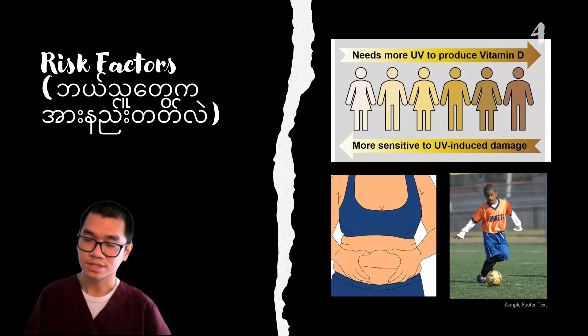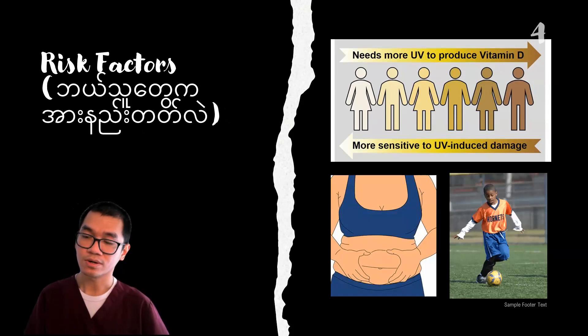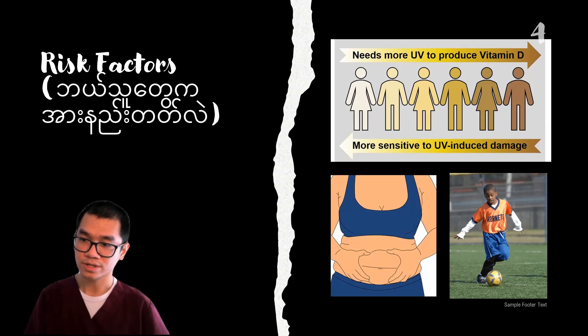Vitamin D can become more like vitamin D or negative vitamin D. When the vitamin D can be used to grow vitamin D, we can also develop vitamin D.